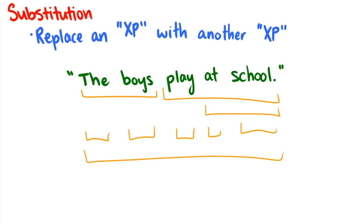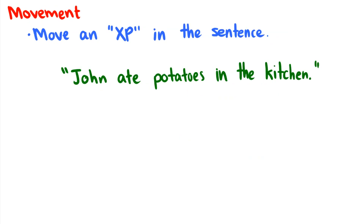There are different levels of these constituencies, which we see in our trees. The next test is the movement test, and this is mainly for prepositional phrases or anything that is acting as an optional piece of information.